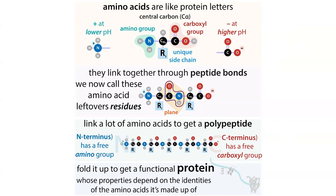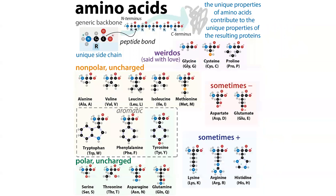If we have amino acids all joined up through peptide bonds, it gets really unwieldy to call them by their full names when you have a whole string of them. So instead we typically refer to them by either their three-letter or their one-letter codes. It's highly recommended that you memorize these three-letter and one-letter codes and also learn to recognize the amino acids. You really should know their abbreviations, as they are used a lot, especially in biochemistry and structural biology when referring to a string of amino acid residues.